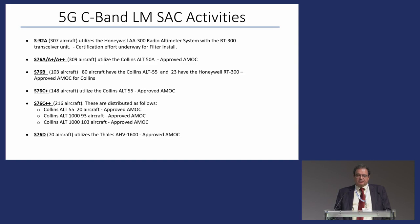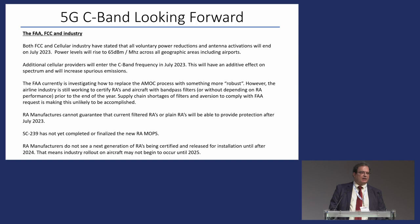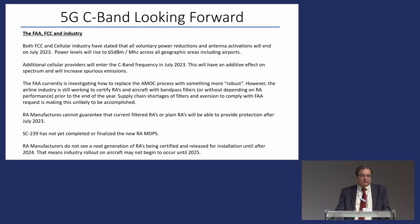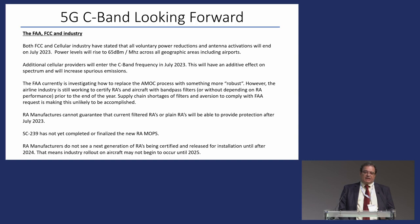A common question from governments is: why not finish SC-239, release the MOPS, and have RAD altimeter manufacturers build new units that won't receive outside of the 4.2 to 4.4 gigahertz spectrum? That's a great idea — we've all thought of it. The problem is the MOPS is not out yet, and RAD altimeter manufacturers are not ready to invest in designing new RAD altimeters because it's a very expensive proposition and they still need actual data for the spectrum. We will basically not have new RAD altimeters available at the earliest until 2025.